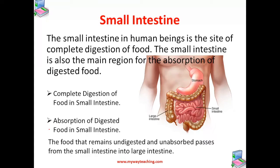The small intestine is a very long tube, about 7.5 meters long. Though the small intestine is very long, it is still called 'small' intestine because it is quite a narrow tube, as you can see in the picture. The small intestine is arranged in the form of a coil in our belly.